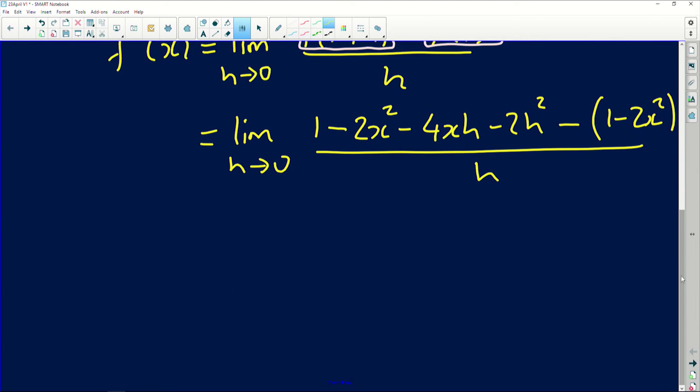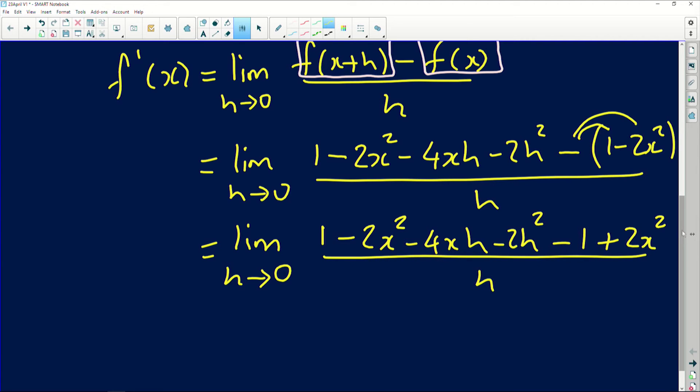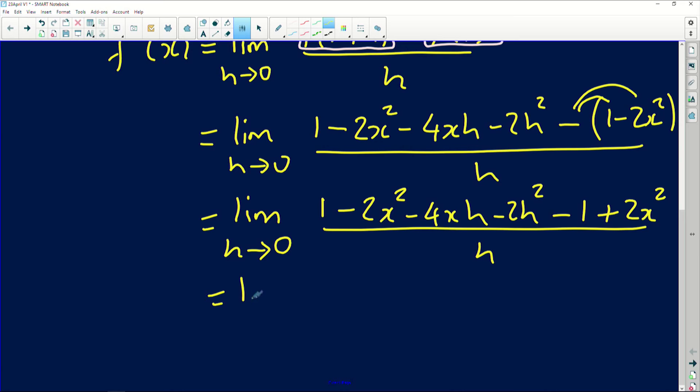Remember to keep writing the limit. You are not allowed to exclude this limit until you have replaced your h as zero. So if I simplify this, we'll have one minus two x squared minus four xh minus two h squared. And then when you multiply by the negative in here, we're going to have minus one and plus two x squared, everything divided by h.